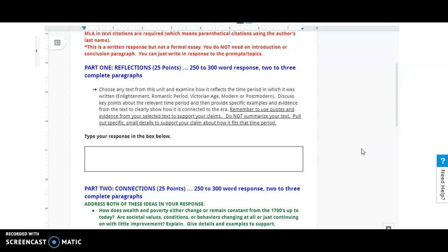Discuss key points about the relevant time period and then provide specific examples and evidence from the text to clearly show how it connected to the era. Remember to use quotes and evidence from your selected text to support your claims. Do not summarize your text. Pull out specific small details to claim about how it fits in the time period. Again, do not summarize your text. I've read it. You've read it. We know what it's about.